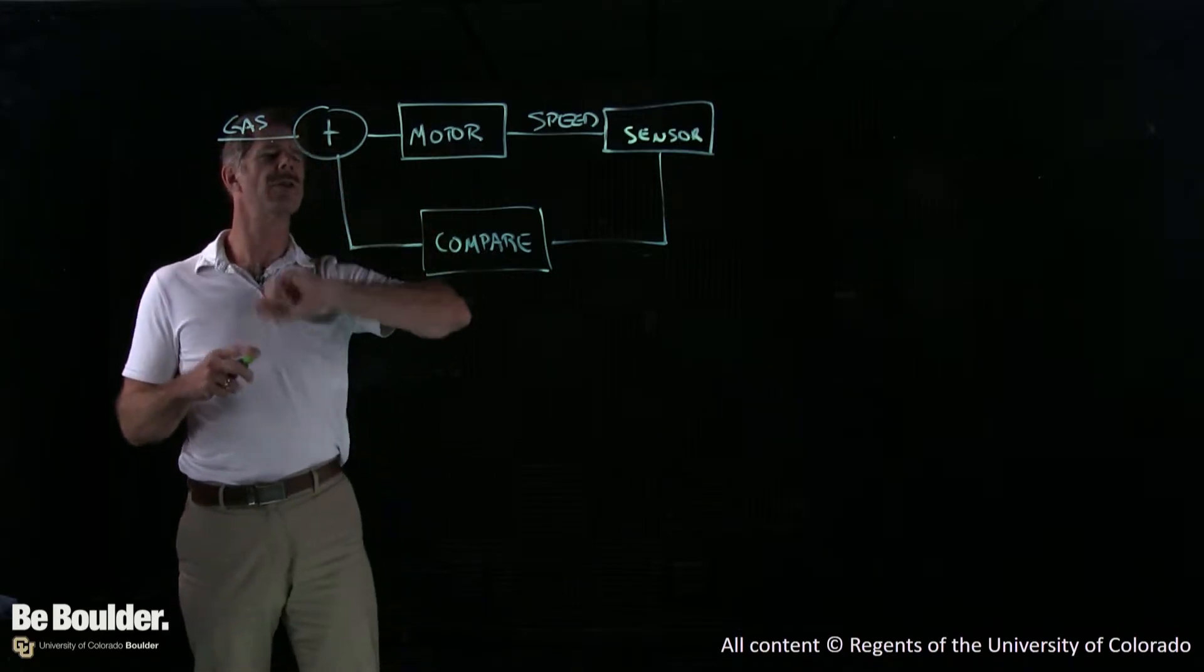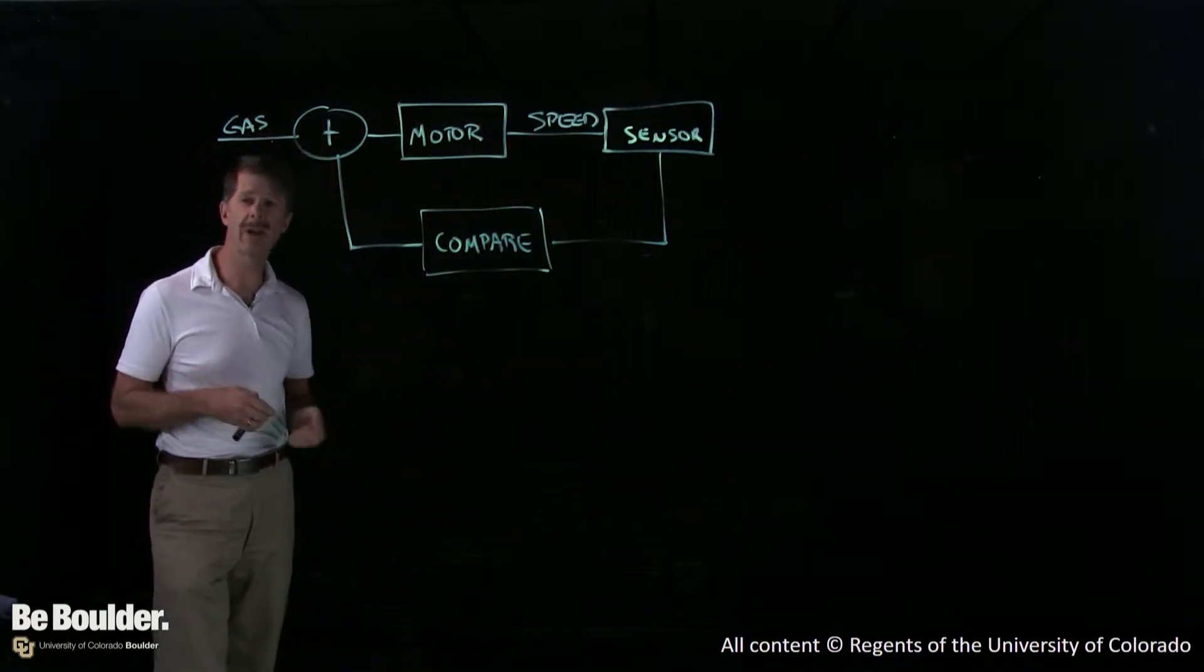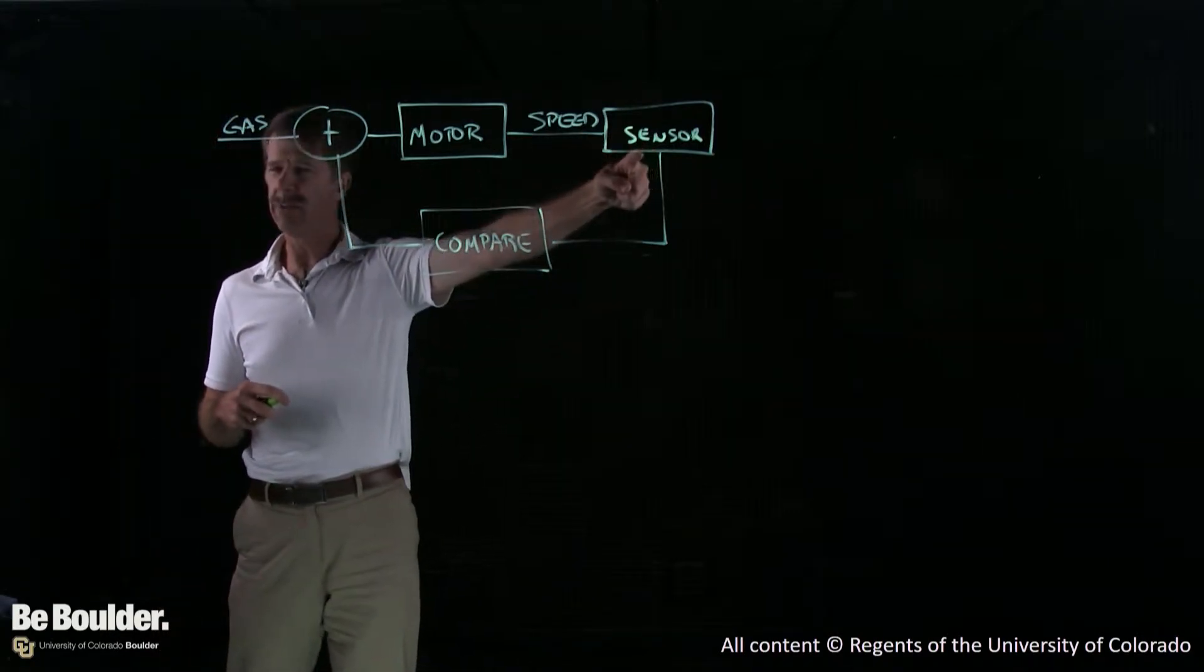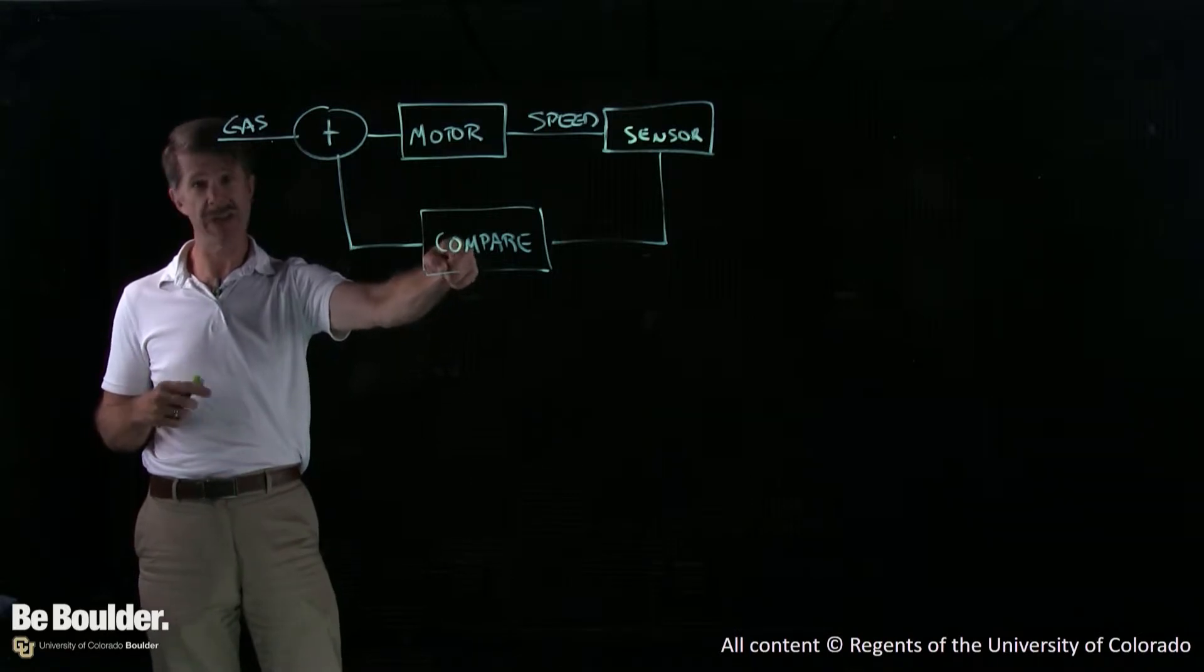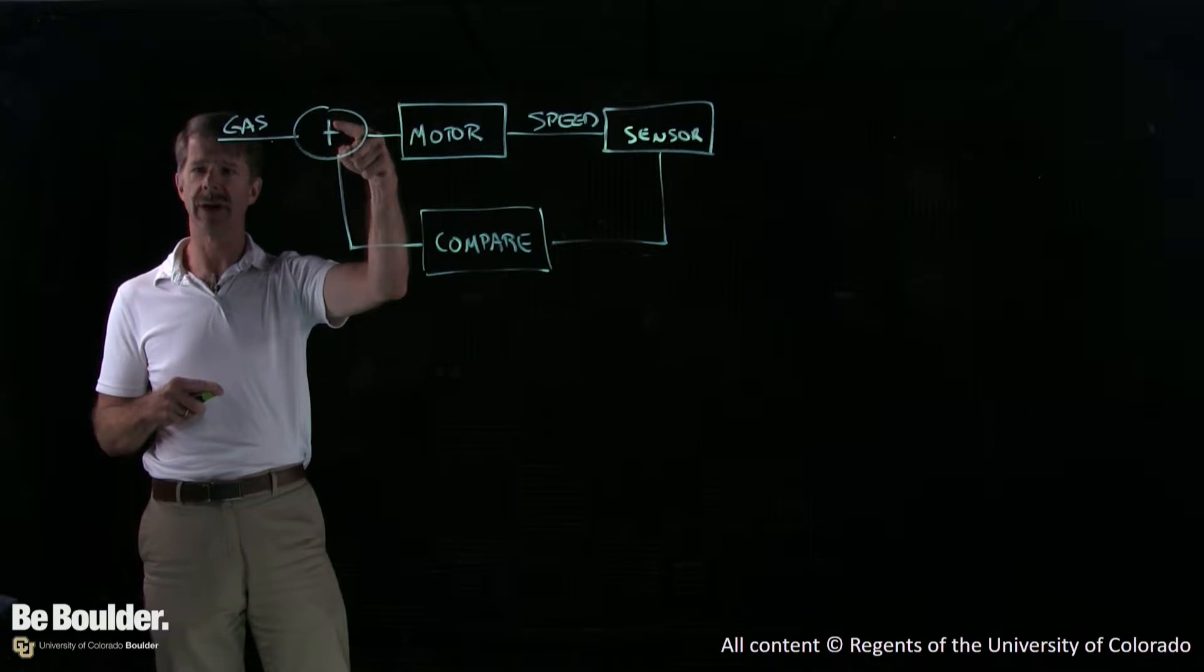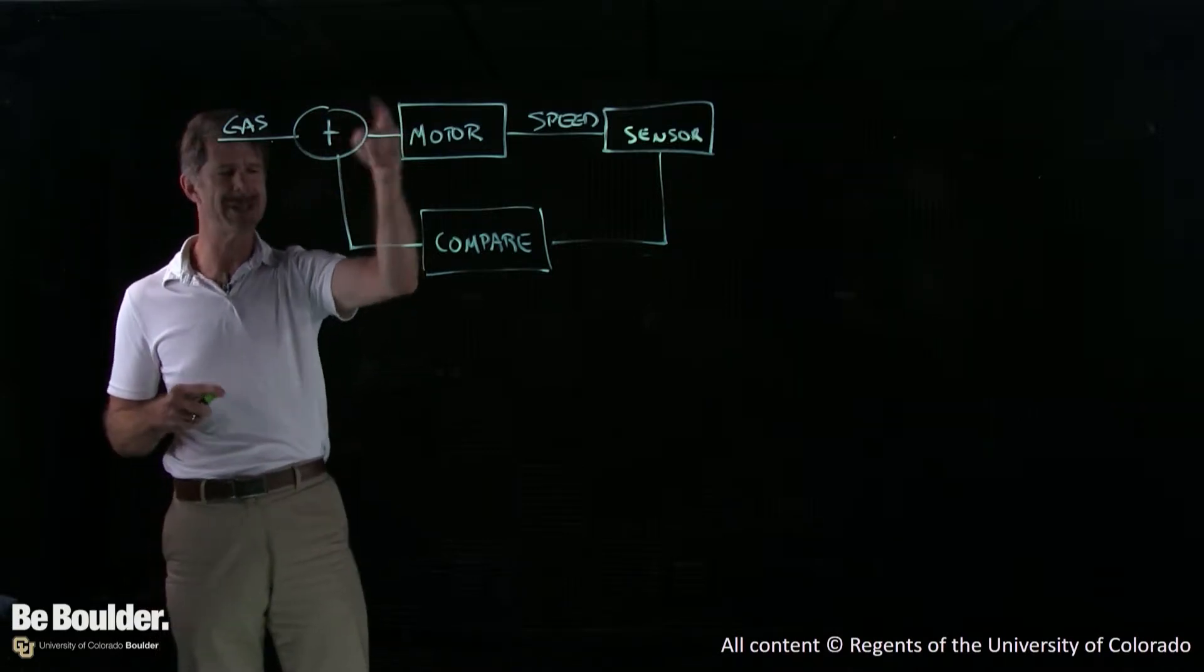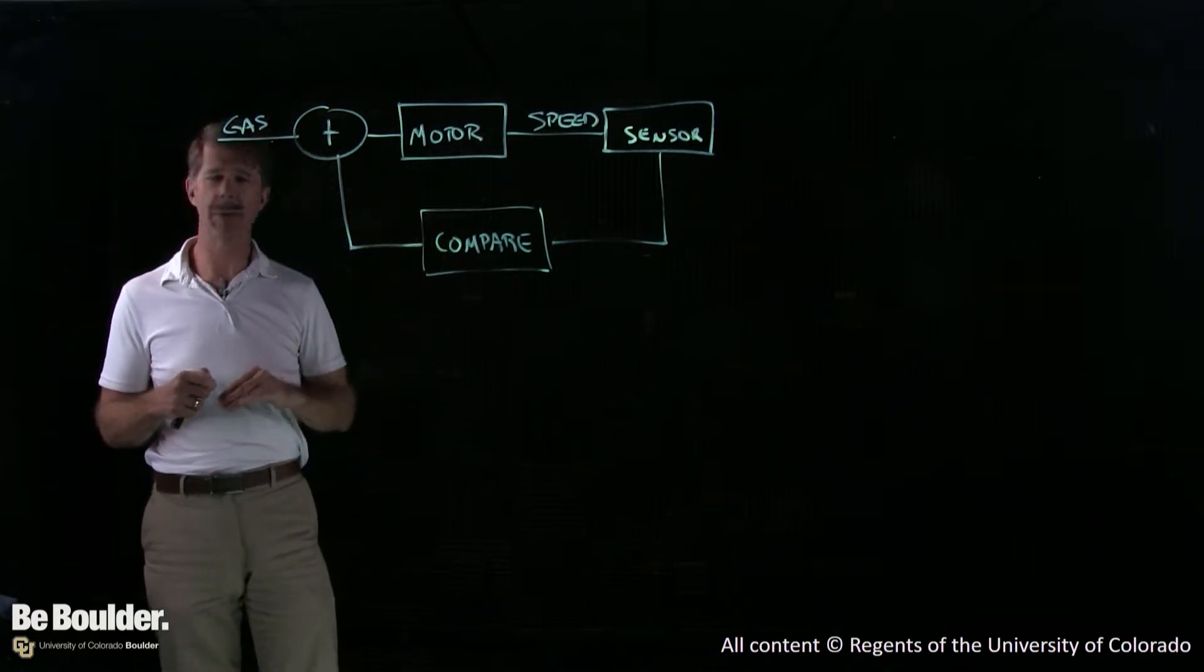I'm going to use that to add or subtract to the amount of gas going into the motor. Let's imagine that I've got gas going into the motor and I'm going at 53 miles an hour and I want to be going 55. So I measure 53 miles an hour, I compare that to 55, I come up with a negative number, and so I increase the amount of gas. I use that now, the speed should come up.